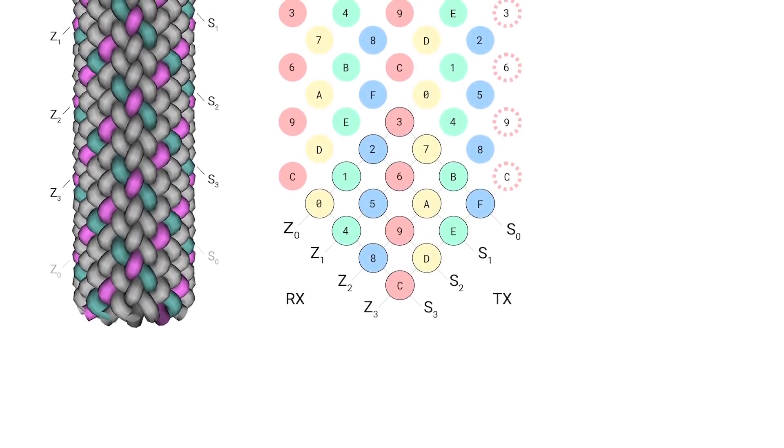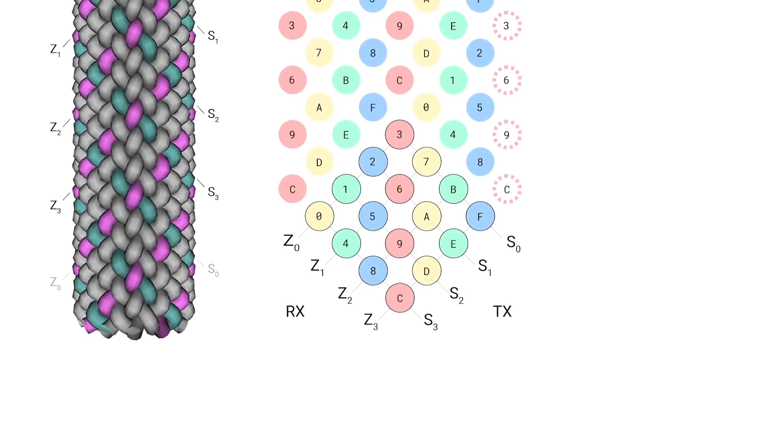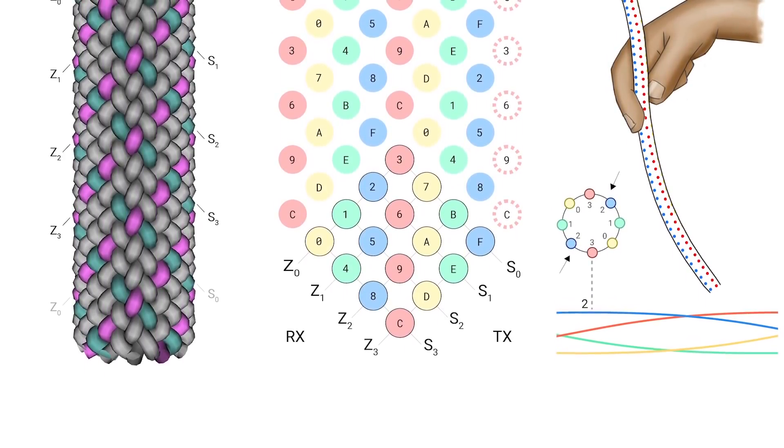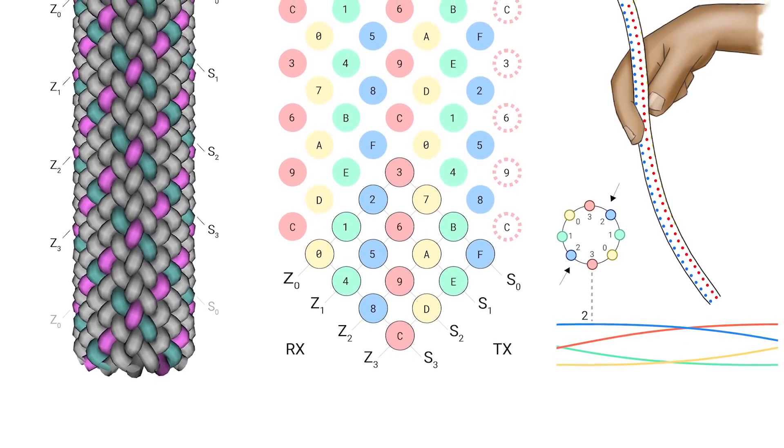For the capacitive sensing matrix, the yarns in the Z direction are used as receive electrodes, and the yarns in the S direction are used as transmit electrodes.